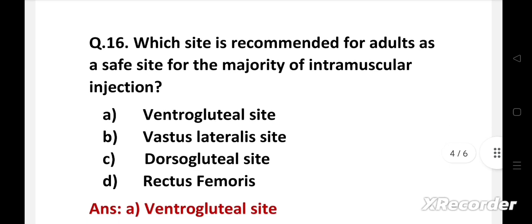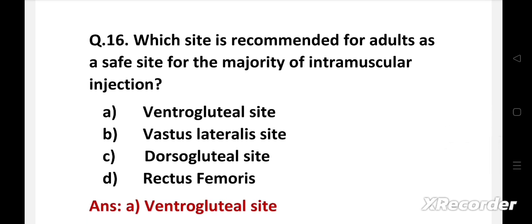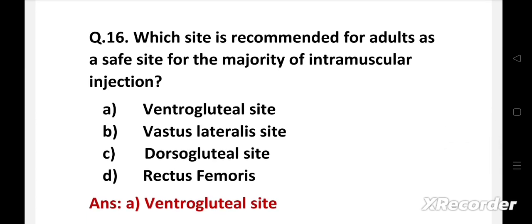Right answer is option A: Ventrogluteal site. Ventrogluteal site for IM injections are considered to be safest because this area is free from major blood vessels and nerves.